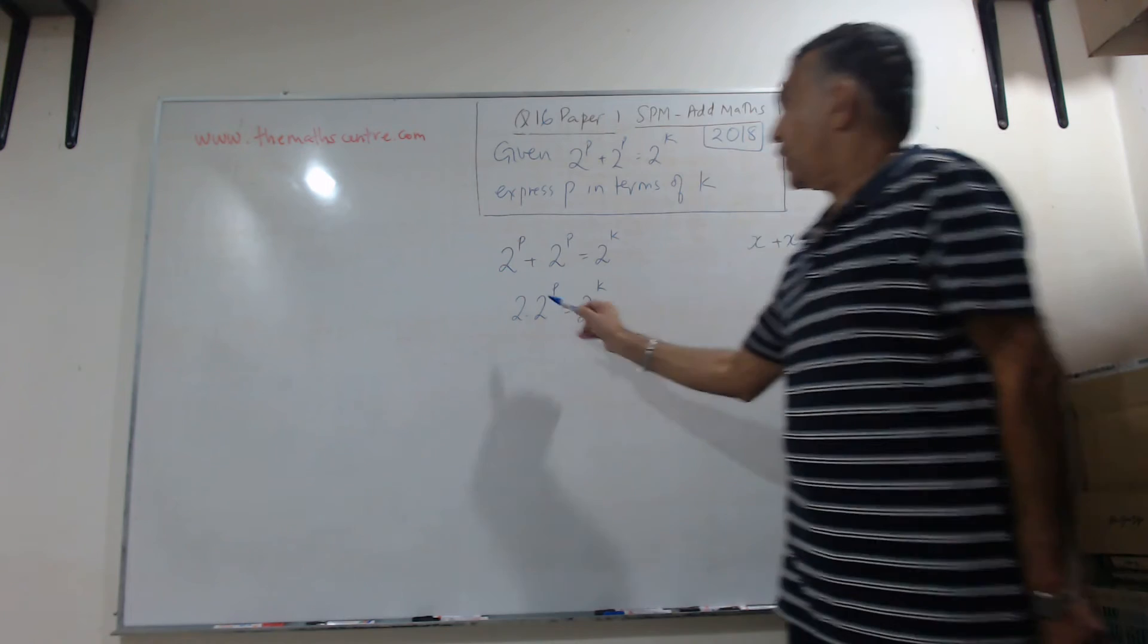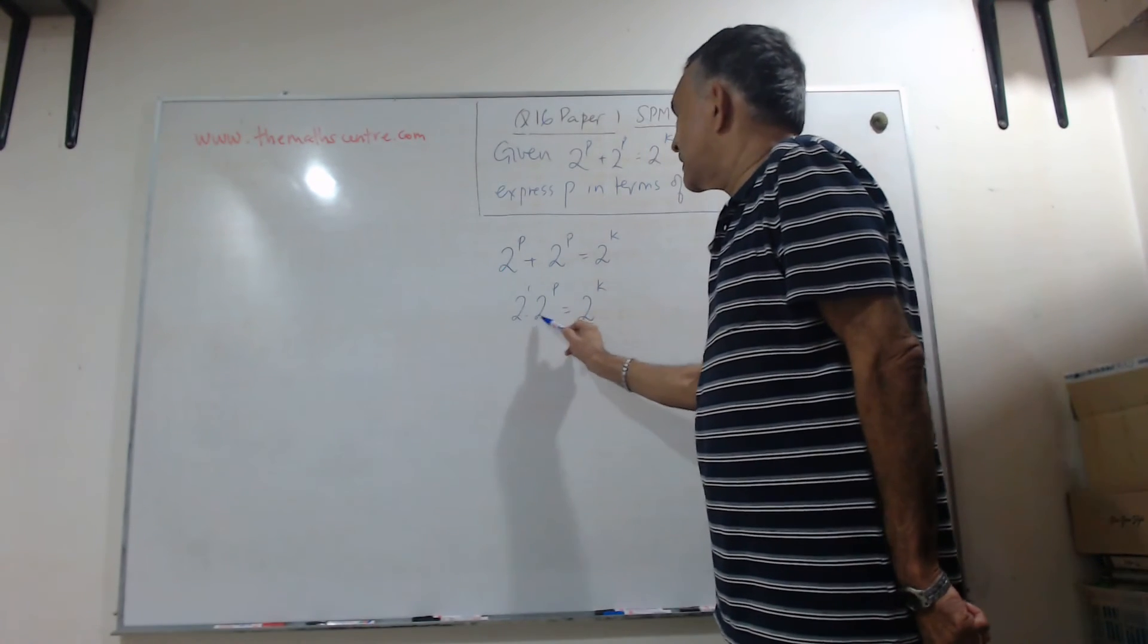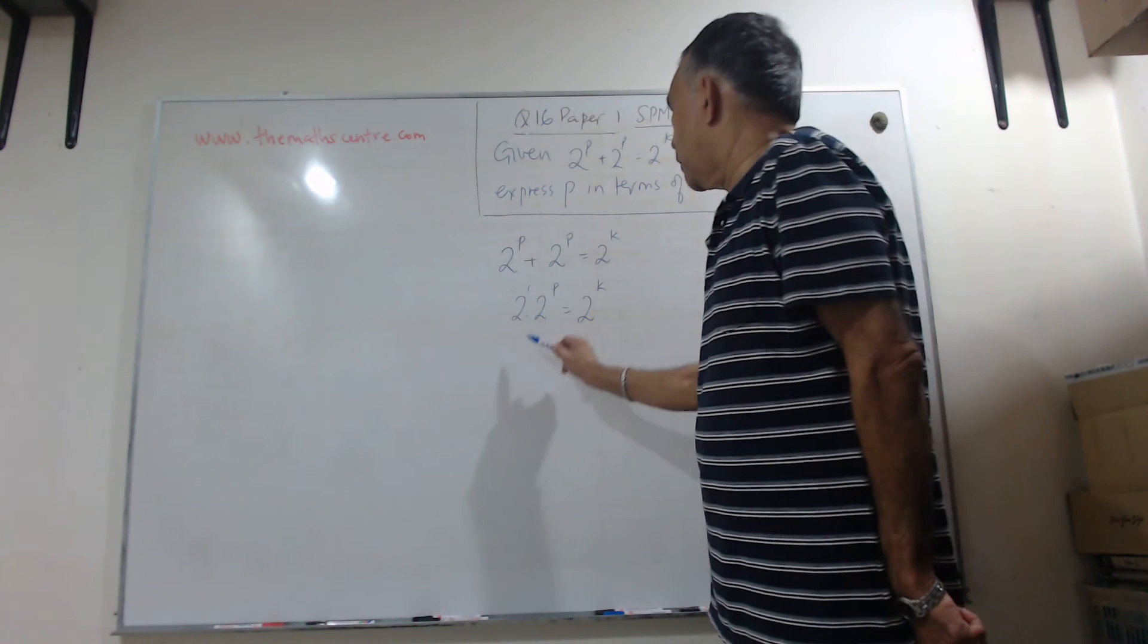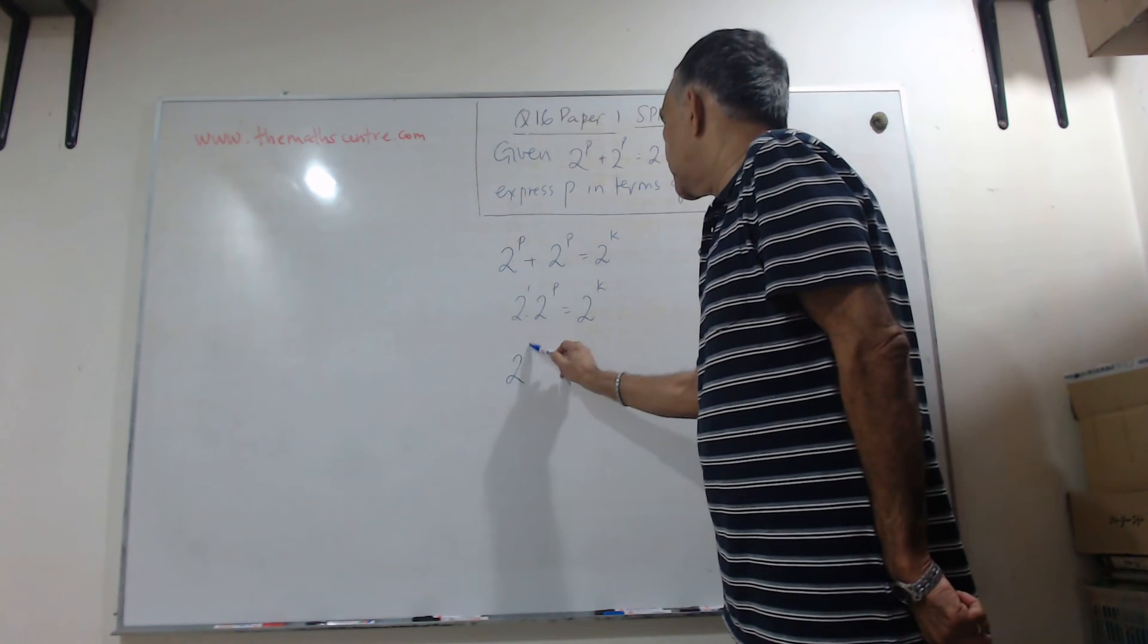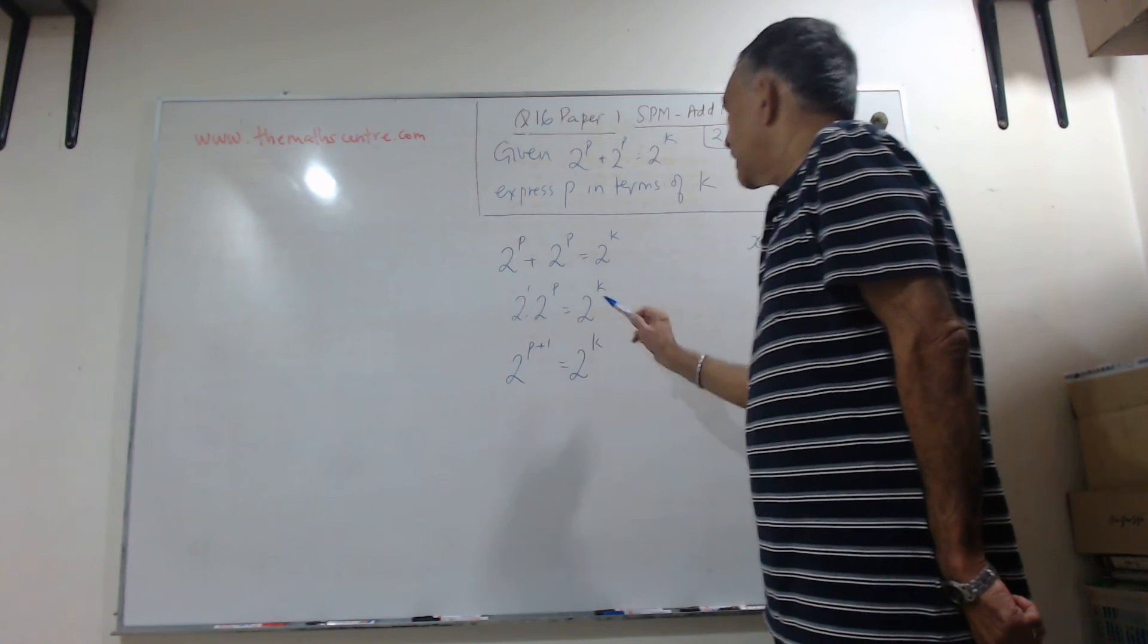So this here, there is a 1 here. This is the same base, so we can add the exponents. So we can write 2 raised to p plus 1 equals 2 raised to k.